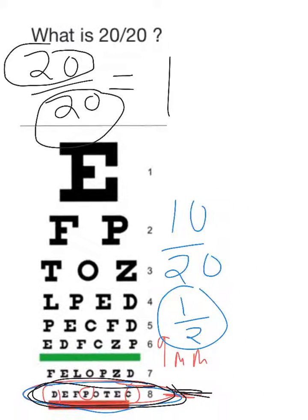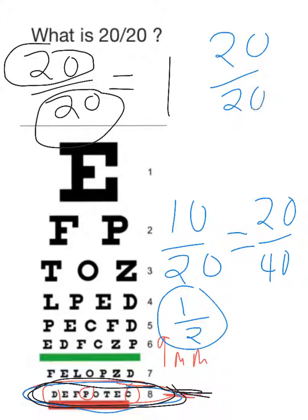Again, it's just a fraction, so 10 over 10 can be 20 over 40. Let's do another example. Let's say a person's vision is 20 over 200. So in this case, this person's vision is about 10 times worse than a person with 20/20 vision.